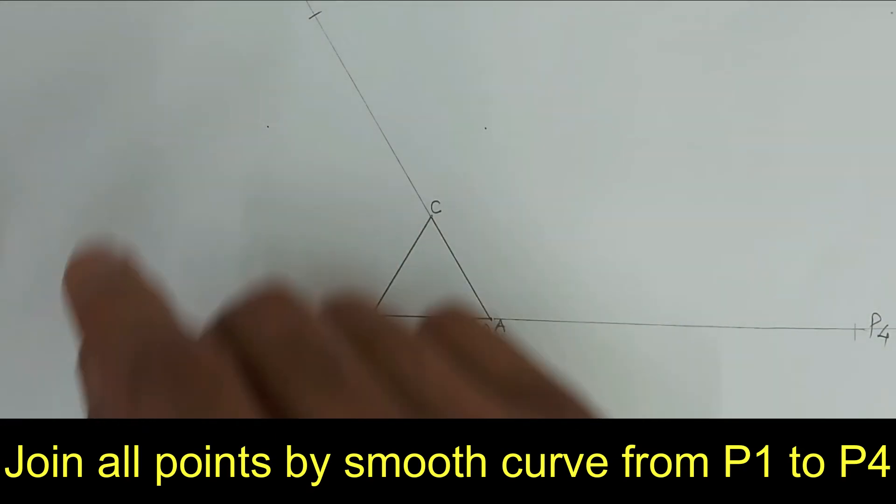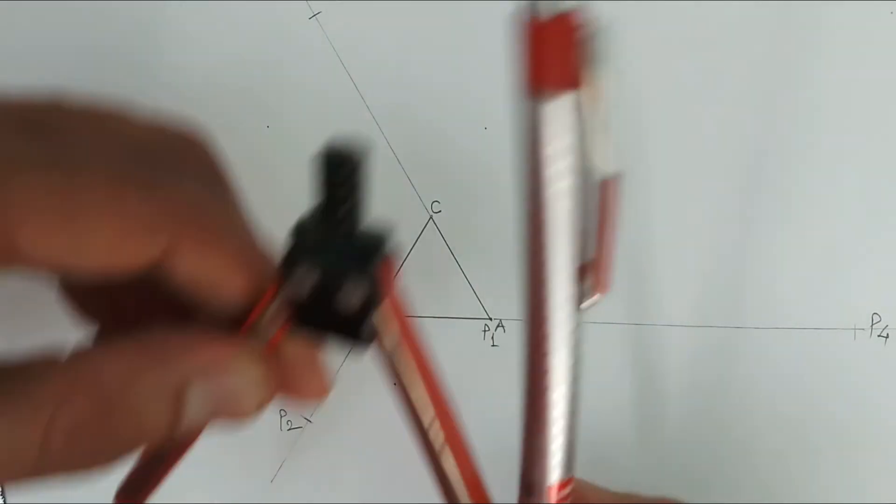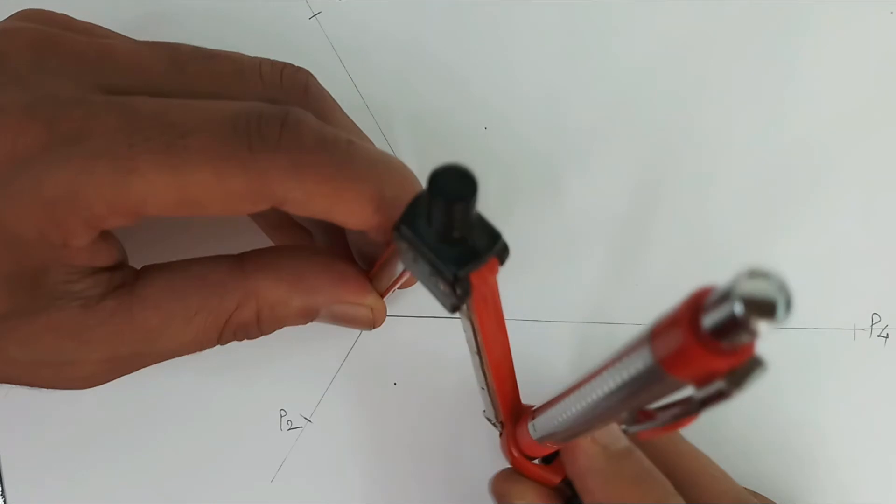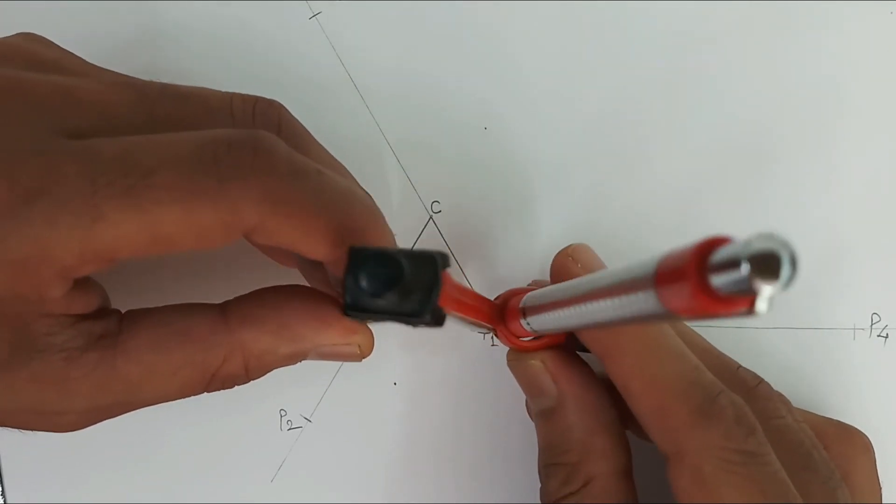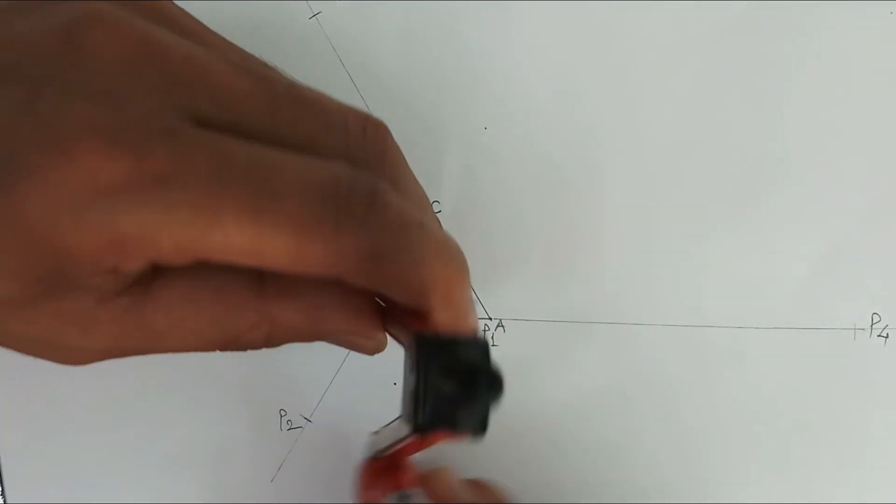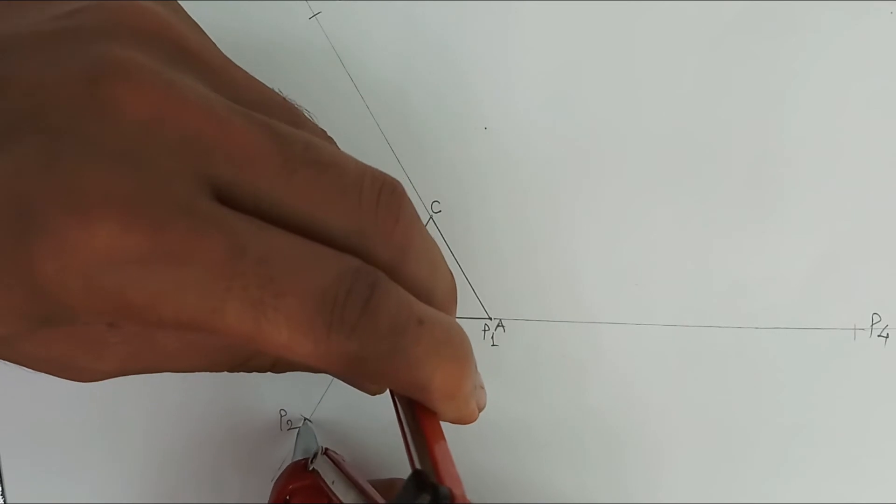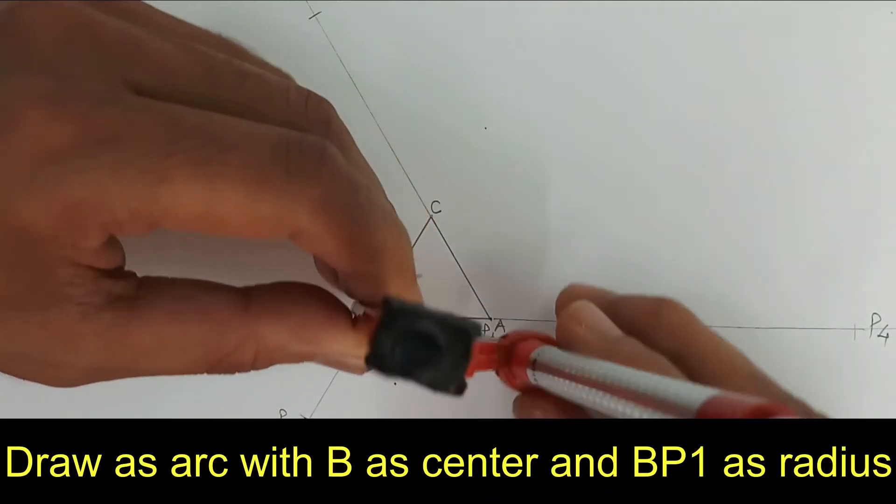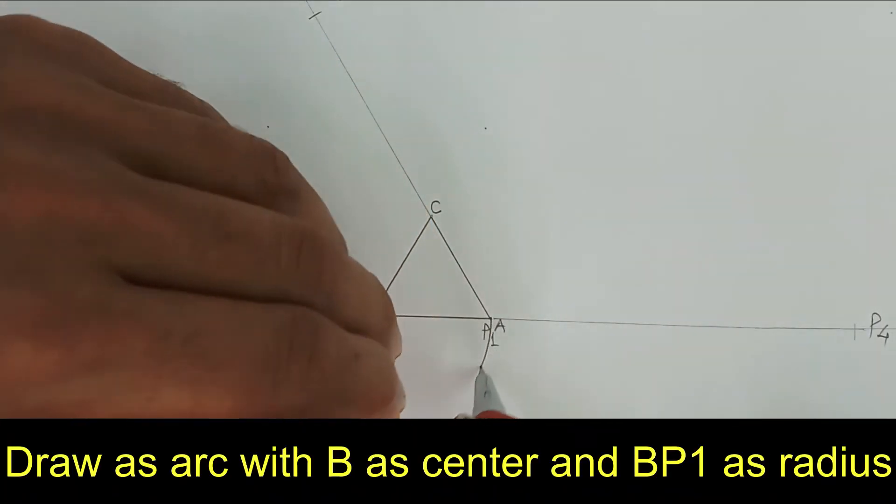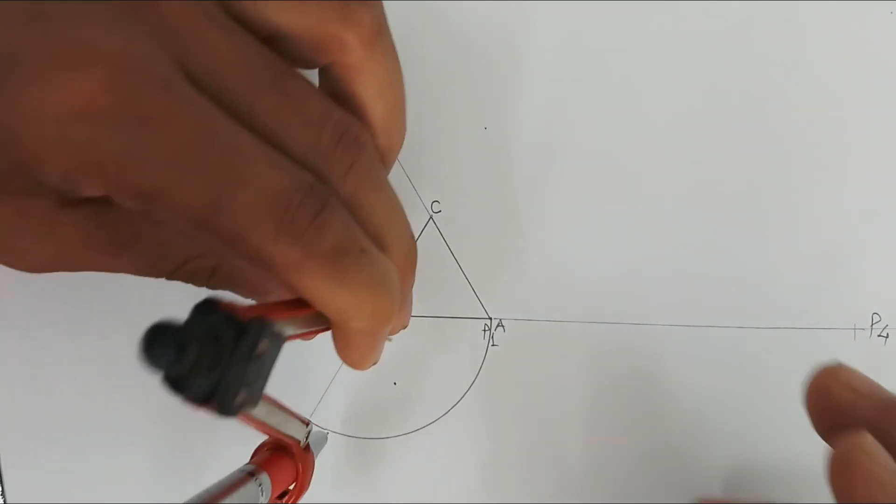Now we have to join all these points by smooth curve. So as we see, initially this end of the thread is rotating with B as center and BP2 as radius. So we have to complete this much part of the curve with B as center and this much as radius. So this part is completed.